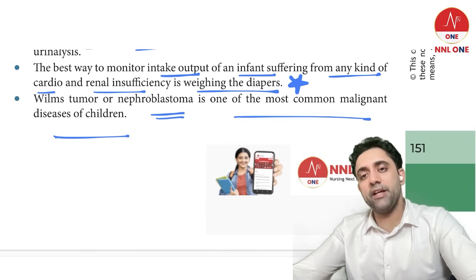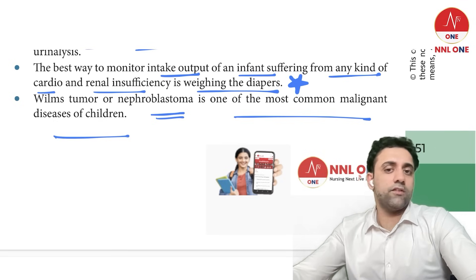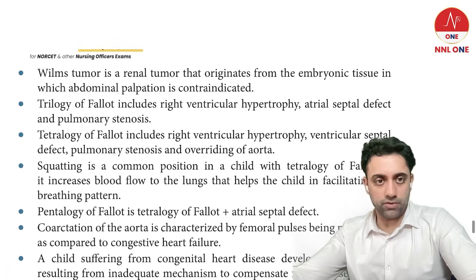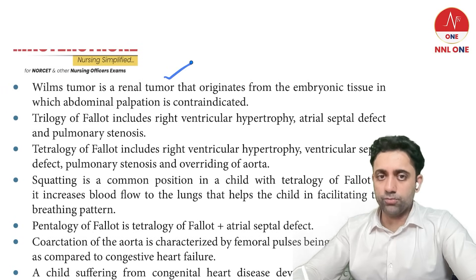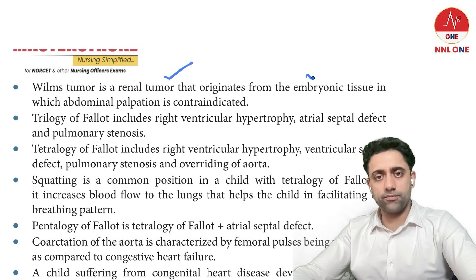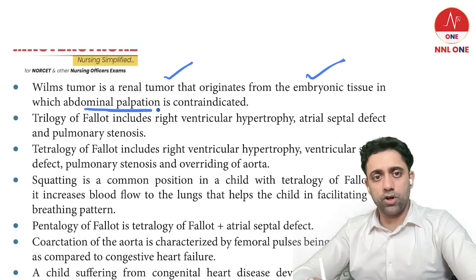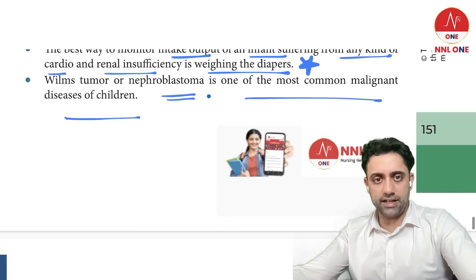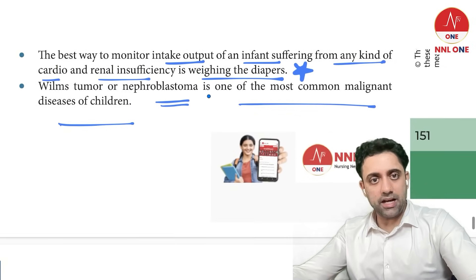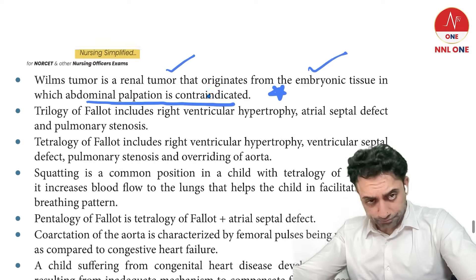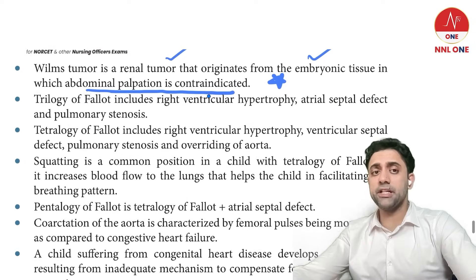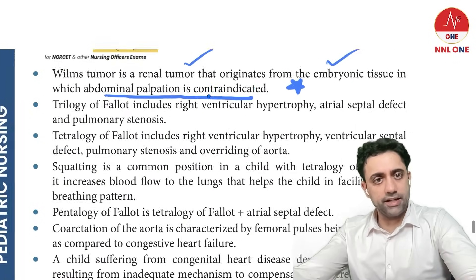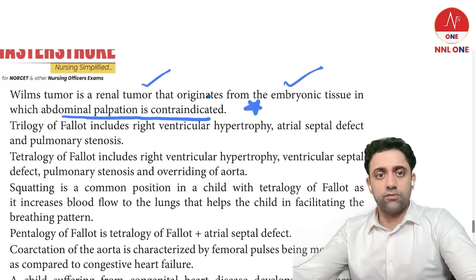Wilms tumor, or nephroblastoma, is one of the most common malignant diseases in children. It is a renal tumor originating from embryonic tissue. In Wilms tumor, abdominal palpation is contraindicated — this is a key point to remember.